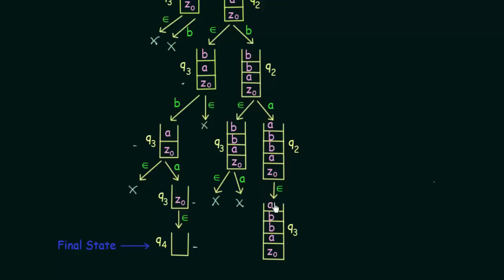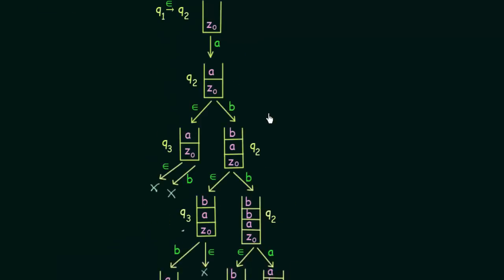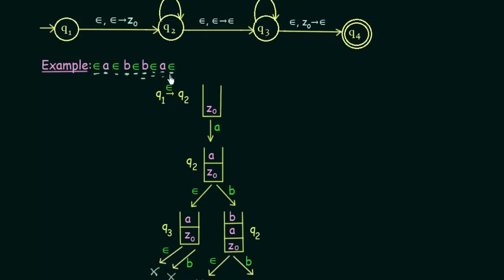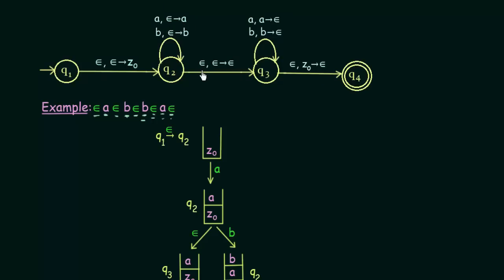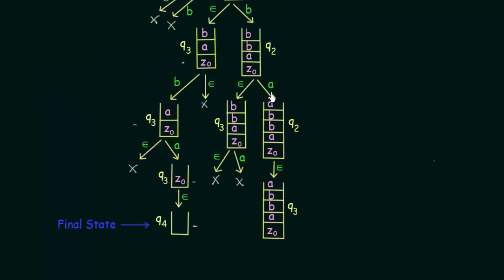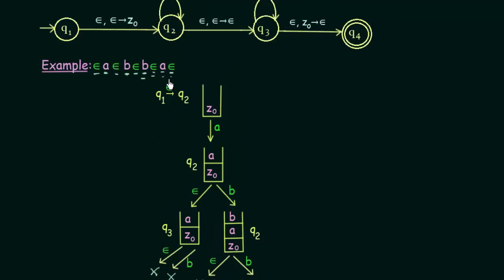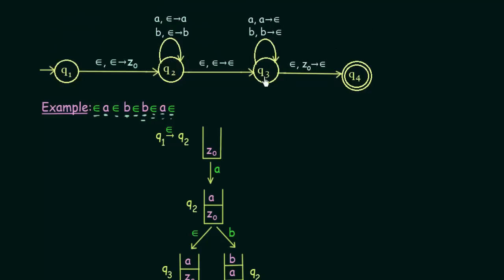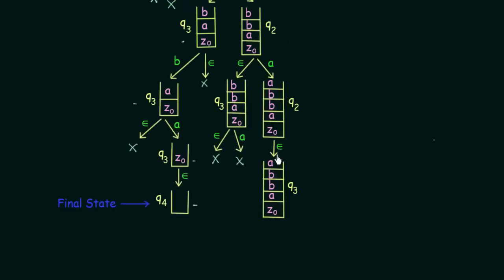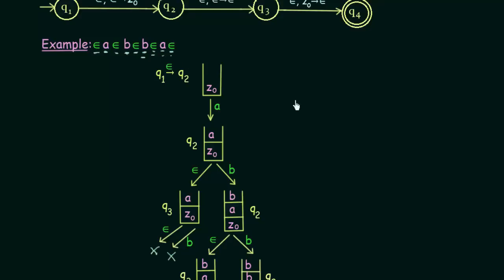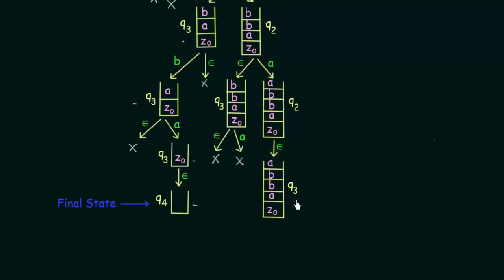The only remaining path is reading A at Q2 after the second B, pushing A, then reading epsilon to go to Q3 with a full stack of B, B, A, A, Z0. But when we reach Q3 after the string is finished, we are not in the final state and the stack is not empty, so this path also fails.